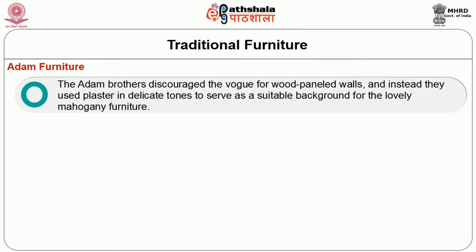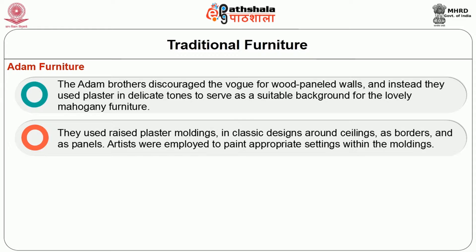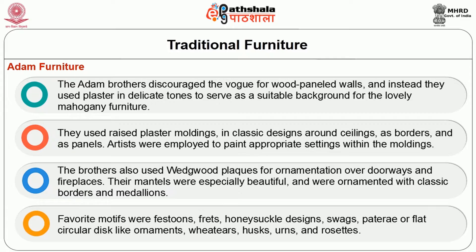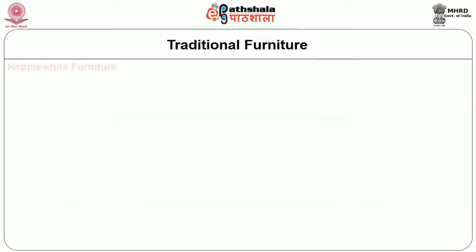The Adam brothers discouraged the vogue of wood panel walls and instead used plaster in delicate tones as a suitable background for lovely mahogany furniture. They used raised plaster mouldings in classic designs around ceilings or borders and as panels; artists were employed to paint appropriate settings within the mouldings. The brothers also used Wedgwood plates for ornamentation over doorways and fireplaces. Their mantles were especially beautiful, ornamented with classic borders and medallions. Favourite motifs were festoons, frets, honeysuckle designs, swags, patera or flat circular disc-like ornaments, wheat ears, husks, urns, and rosettes.